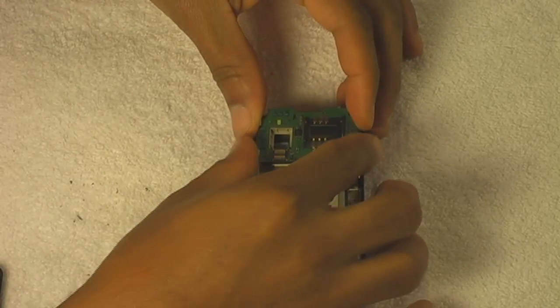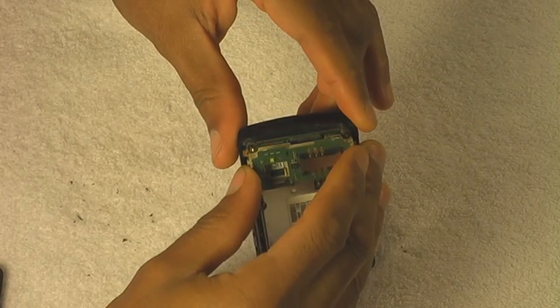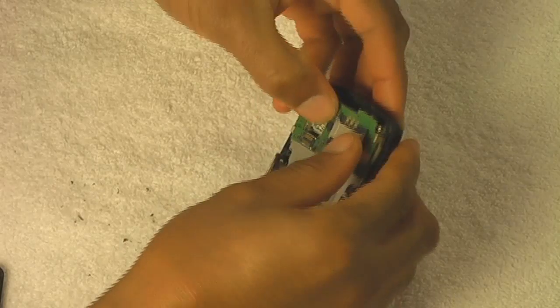Now we're going to put the SIM card logic board on. Same thing, line it up. Wait a minute, take a look at it. Make sure you got it lined up right there on top. Now you can snap it in. Oh yeah.